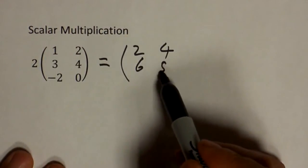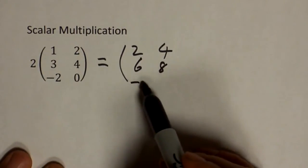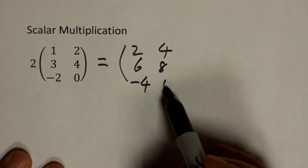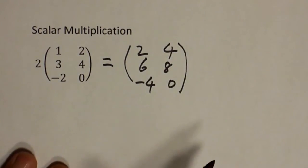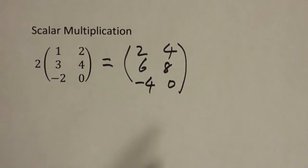Two times negative two, two times zero. Now, matrix products, however, is very complicated. It looks weird.